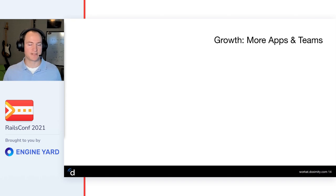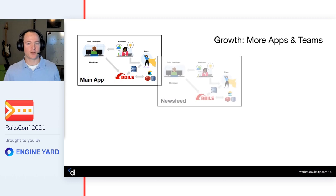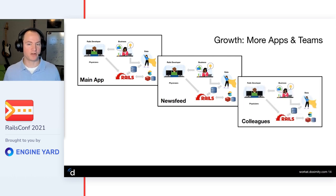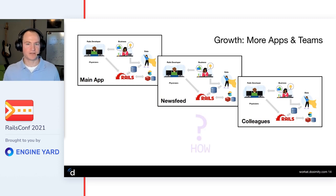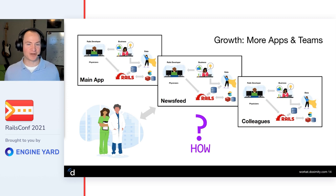We had a lot of growth at this time. We had our main application with the temp table setup, with Rails developers and data team working in harmony. Then we brought up our newsfeed - delivering all the medically relevant news. We brought up another service to handle colleagues and facilitate connections between people in our network. How do we manage this setup so that each team is not having to maintain their own way for their data team to integrate with the Rails application? At the end of the day, physicians don't care about the backend - they just want the data they need.